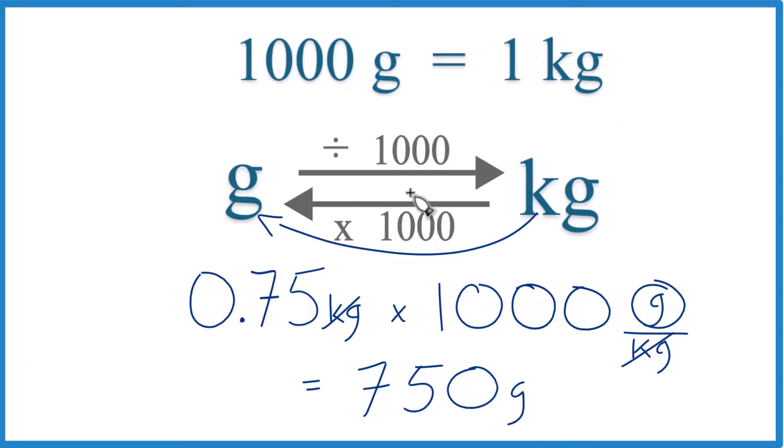So in answer to our question, when we convert 0.75 kilograms to grams, we get 750 grams.